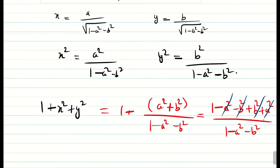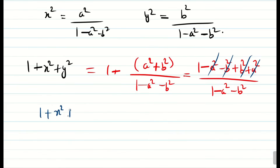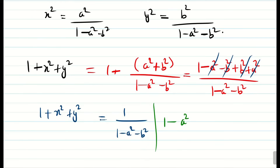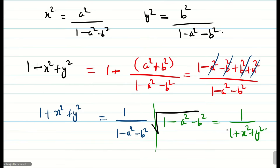After simplification, the a square and b square terms cancel in the numerator, giving 1 plus x square plus y square equal to 1 divided by 1 minus a square minus b square. What we actually need is to eliminate the term 1 minus a square minus b square under the square root. This gives us 1 divided by 1 plus x square plus y square. Taking the square root on both sides, we achieve the target.